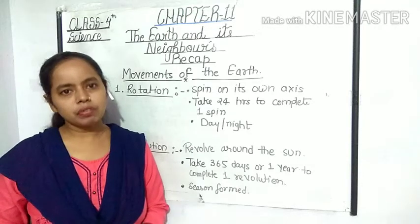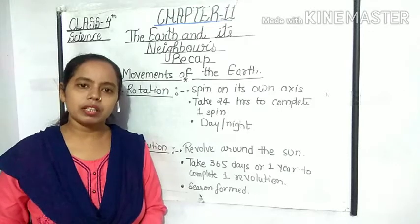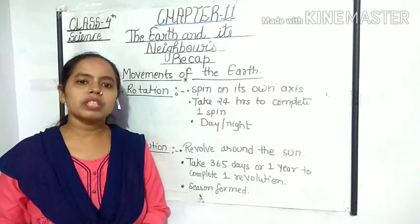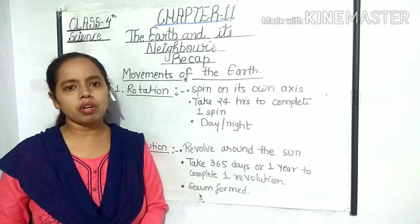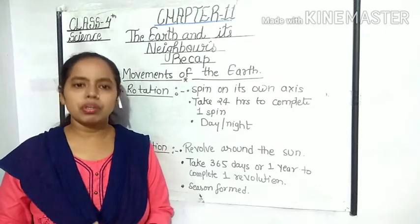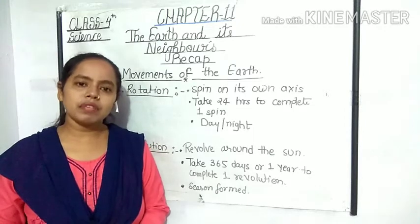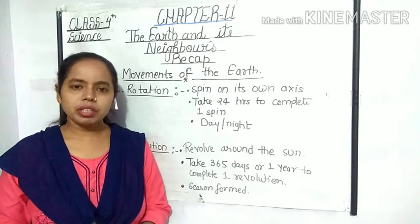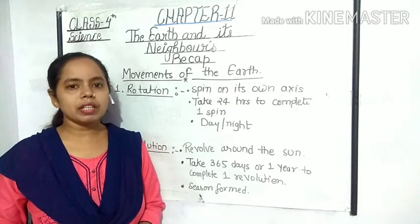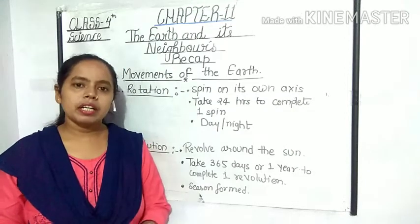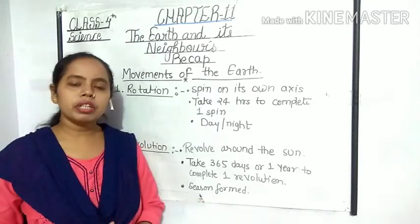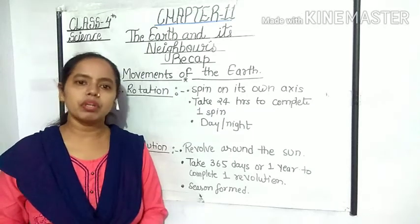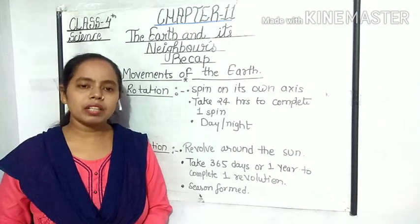The earth moves around the sun on a fixed path. This movement of the earth around the sun is called revolution. The earth takes 365 days — one year — to complete one revolution. The seasons are formed due to the revolution of the earth.